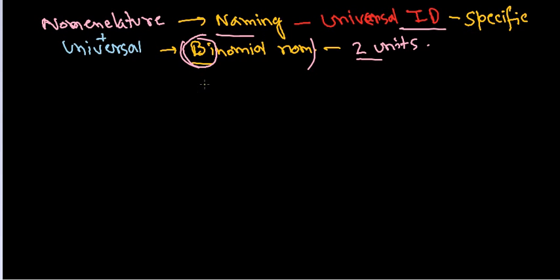If you look at here, in the binomial nomenclature, it was first started by the genius scientist Carolus Linnaeus. And Carolus Linnaeus started this and this binomial nomenclature process actually deals with Latin words.